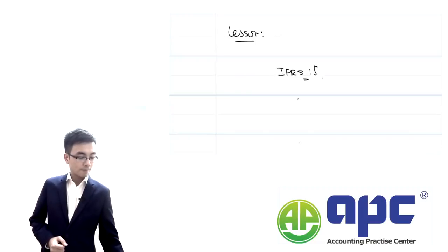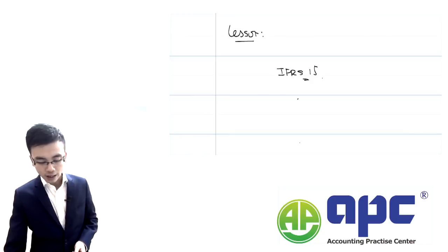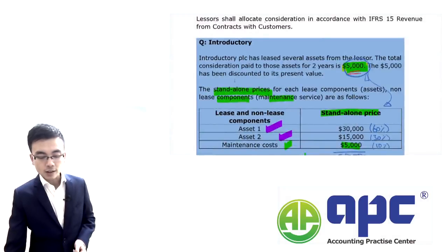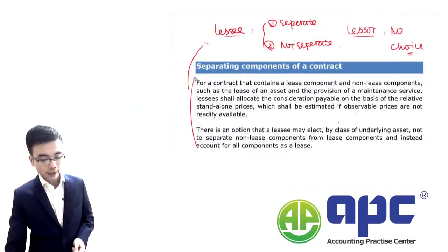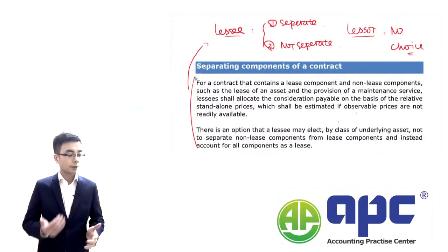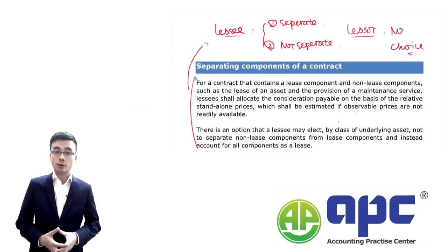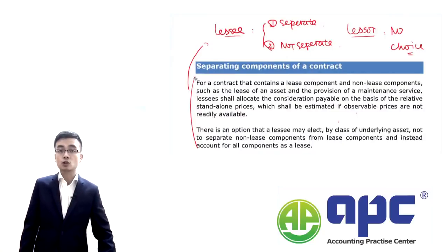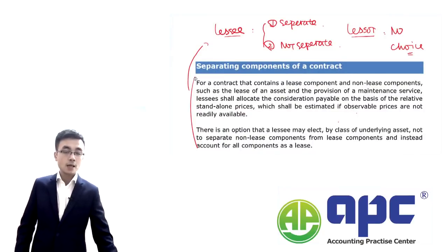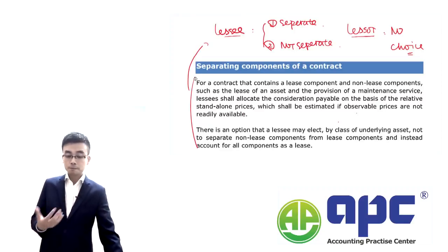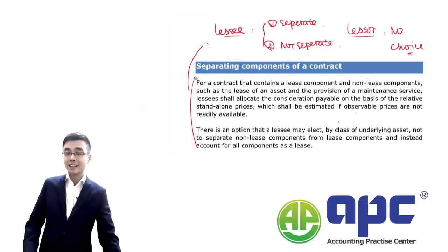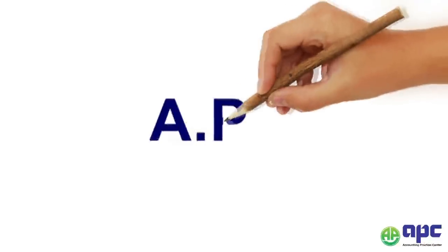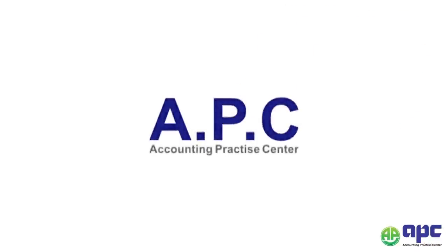I'm going to stop here for the first section of IFRS 16, and I hope you find it not too complicated. In the next section onwards, we'll first be going through some of the key definitions according to IFRS 16, and also going through a lot of examples. We'll see each other in the next section. Bye for now — APC, accounting for your future.